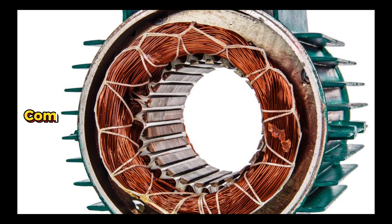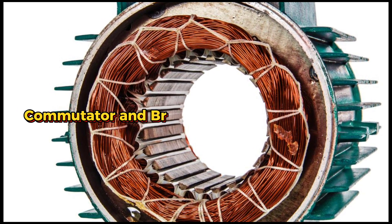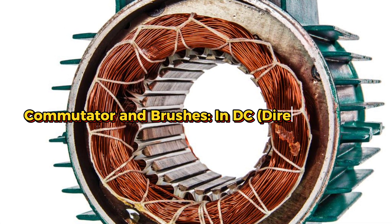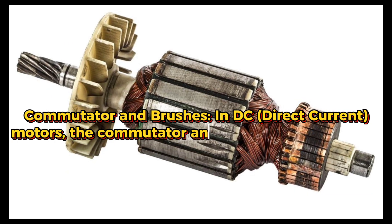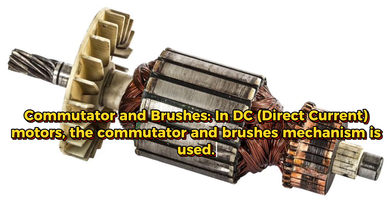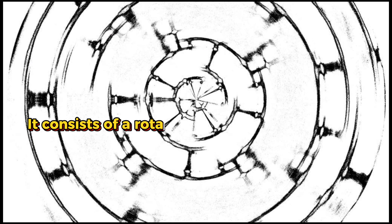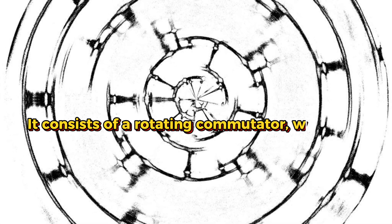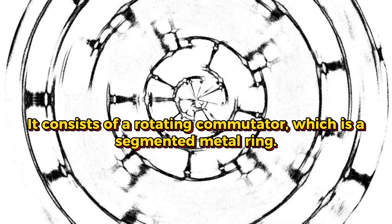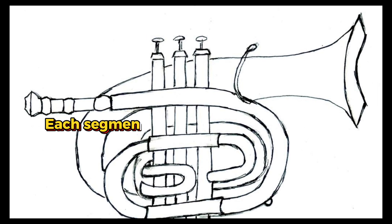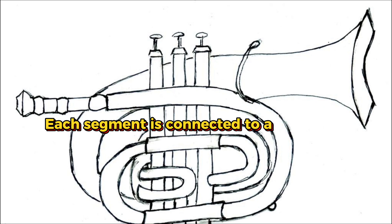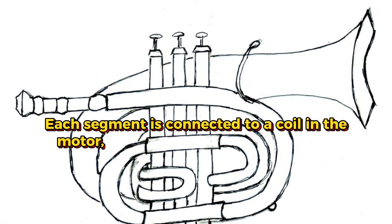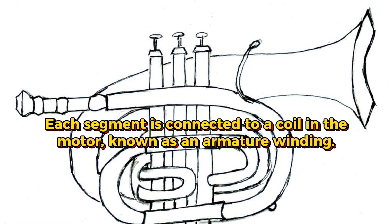2. Commutator and Brushes. In DC direct current motors, the commutator and brushes mechanism is used. It consists of a rotating commutator, which is a segmented metal ring. Each segment is connected to a coil in the motor, known as an armature winding.